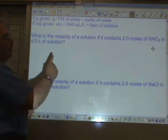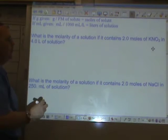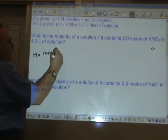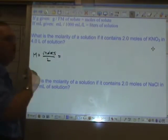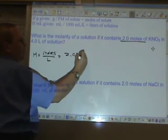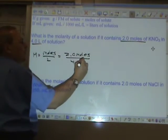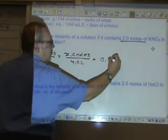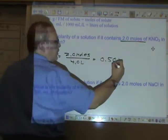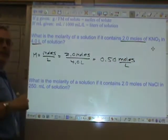What is the molarity of a solution if it contains 2.0 moles of KNO3 and 4.0 liters of solution? Well, molarity is equal to moles divided by liters. And they give us both pieces of information. There's our moles. Divided by, there's our liters. Now, the unit can be one of two things. You can call it moles per liter.